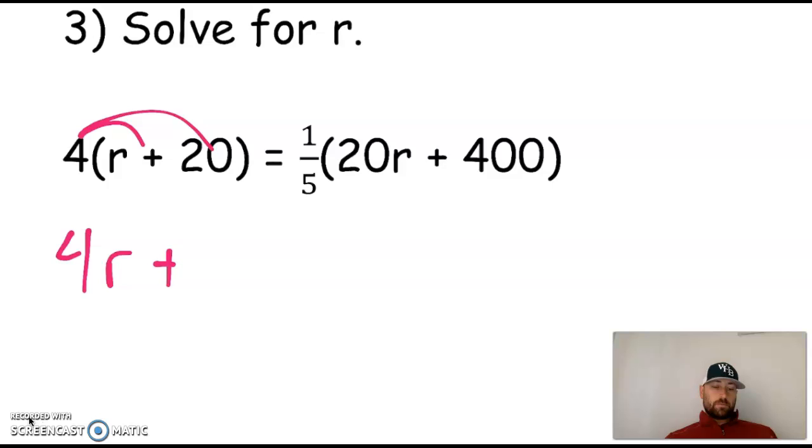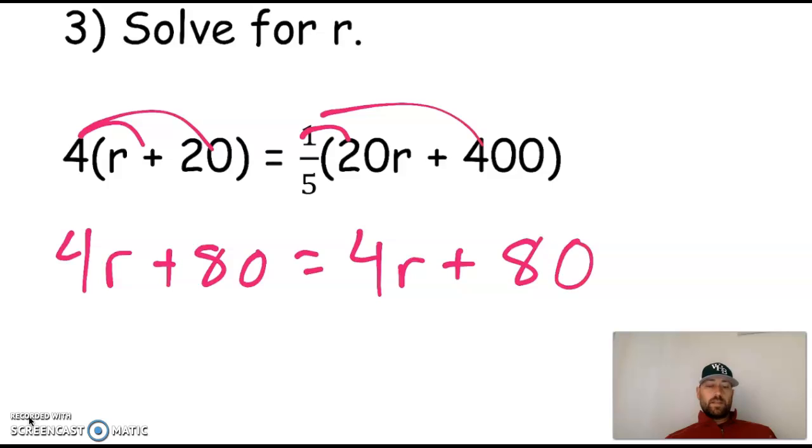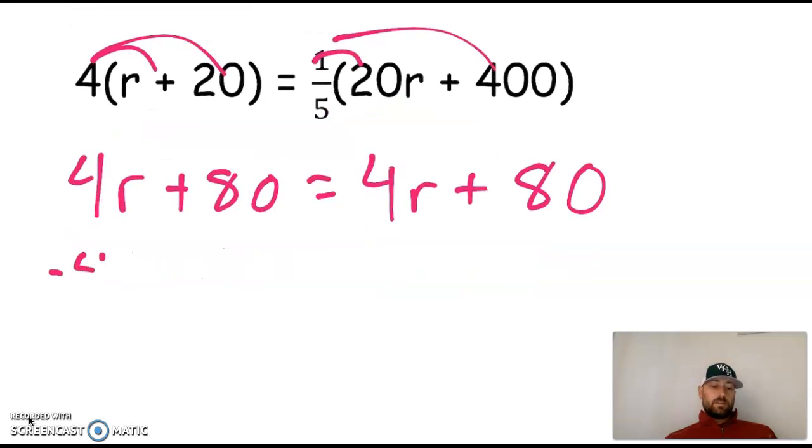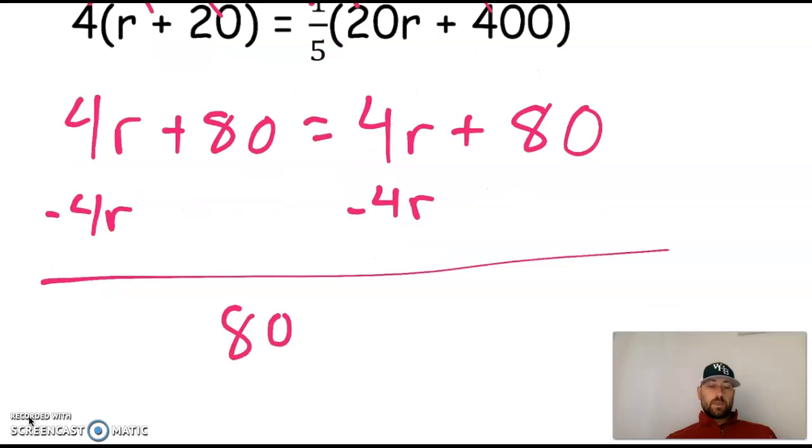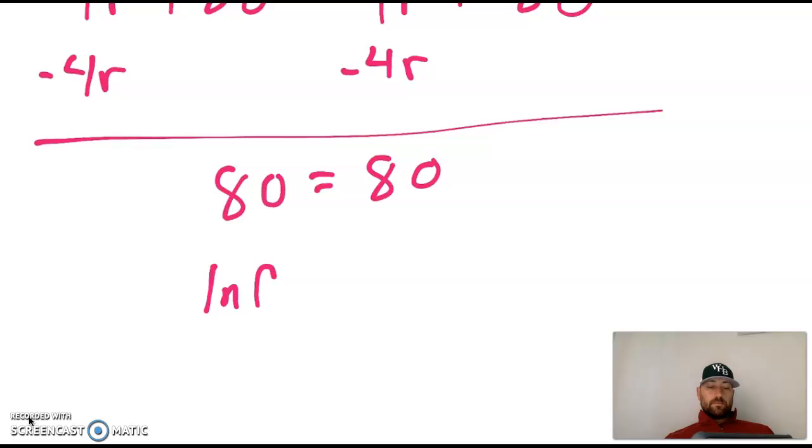Okay. Here we go. First thing we're going to do on both sides is distribute. Distribute, distribute, so 4r plus 80, one-fifth of 20r is 4r, one-fifth of 400 is 80. You can see it has the same coefficient and the same constant that makes a true statement. So that is infinitely many solutions.